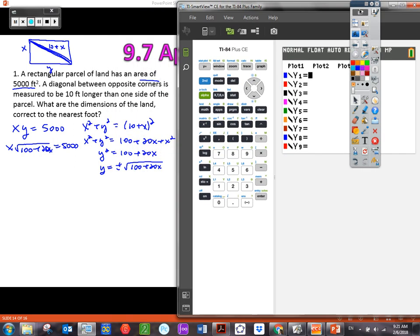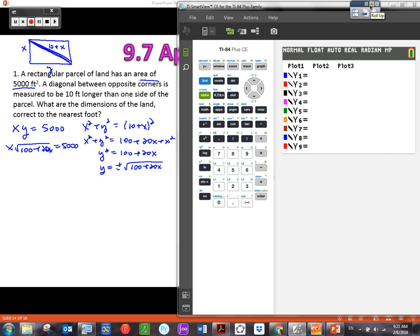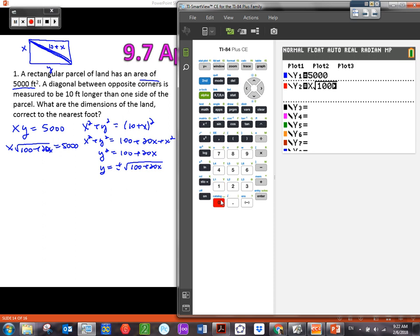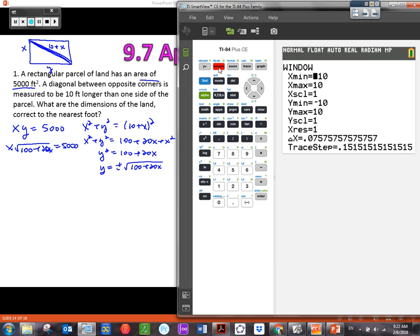Let's pull up our calculators. I'm going to go to the grapher, and I'm going to put 5000 in y1 and this expression in y2. So 5000 in y1, and then y2 I'm going to put in x times that root: x times the root of 100 + 20x. Our window is going to need some work. We're at 5000 for our y values. I would go to my window and change my y max to 5500.